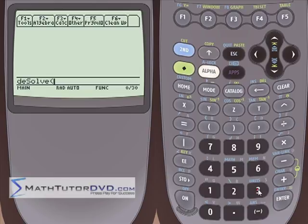So let's do something like 3 times y, let's do a first order, y prime, plus 9 times y, and let's make it easy, make it equal to 0. So, comma, x, comma, y.